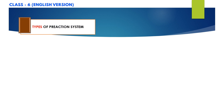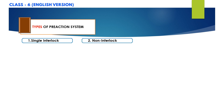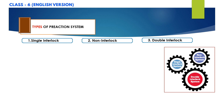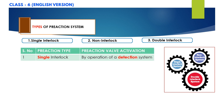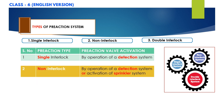NFPA 13 defines three basic types of pre-action systems: number one, single interlock type; number two, non-interlock type; and number three, double interlock type pre-action systems. Single interlock pre-action systems admit water to sprinkler piping upon operation of detection devices only, and detection systems may be electric or pneumatic. Non-interlock pre-action systems admit water to sprinkler piping upon either operation of detection devices or automatic sprinklers.